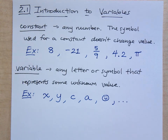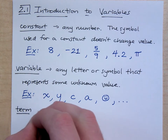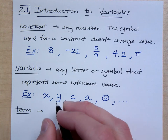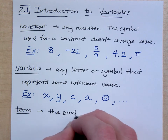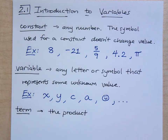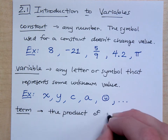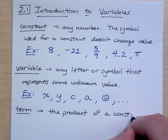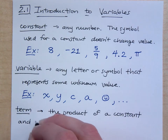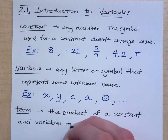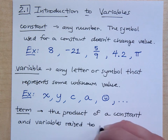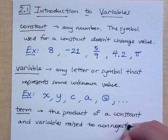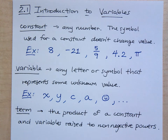So that's what it means to be a constant and a variable. Together, we look at what it is to be a term. A term is the product — and product means multiplication — of a constant and variables raised to non-negative powers. A term is what happens whenever you multiply a constant and variables together. That multiplication — that glue that we keep talking about — sticks that stuff together and creates what we call a term.